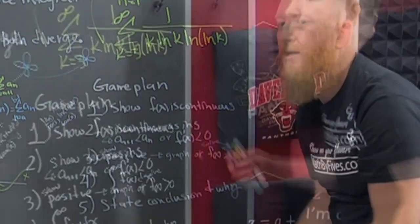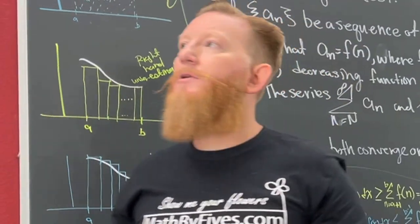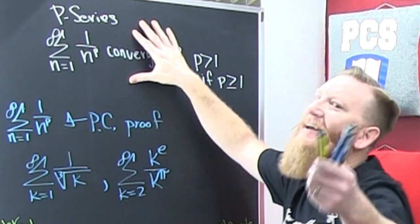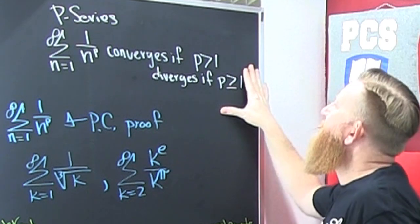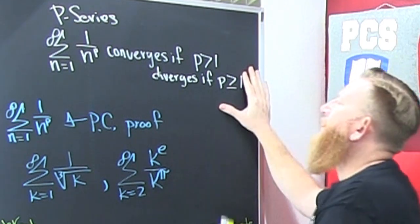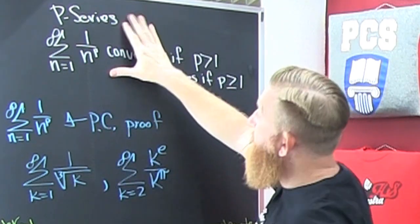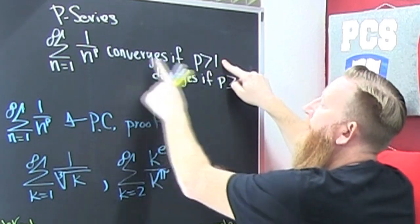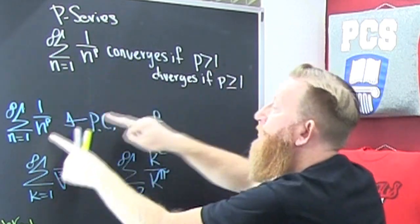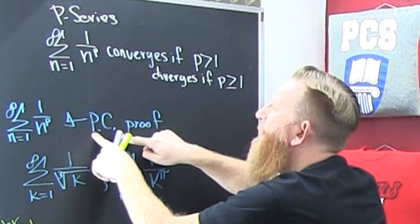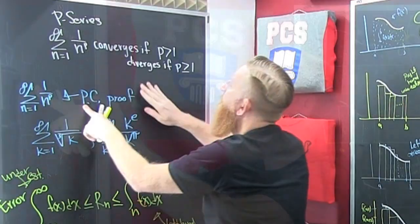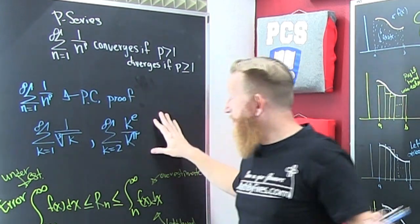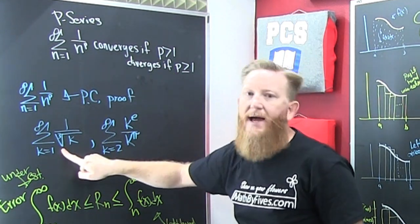Probably the most important result that comes out of the integral test is the P-series convergence rule. The P-series converges if p is any real number greater than 1. The proof is in the Playlist Exclusive, along with examples of P-series.